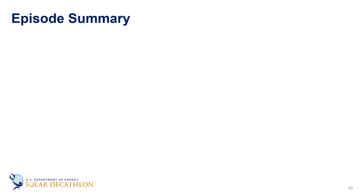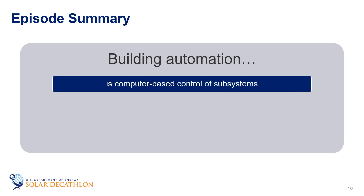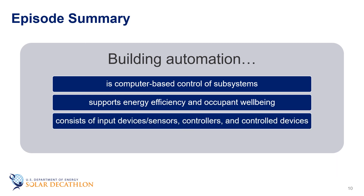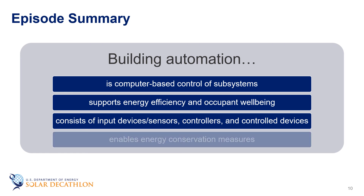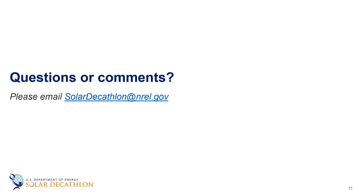Let's summarize what we learned. Building automation is the computer-based control of building subsystems. They automate a building for better energy efficiency and occupant well-being. They consist of input devices or sensors, controllers, and controlled devices. We also looked at some common energy conservation measures enabled by building automation. Please let us know if you have any questions or comments. Thank you.